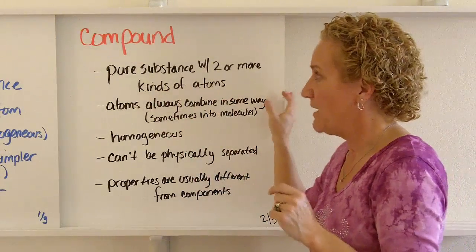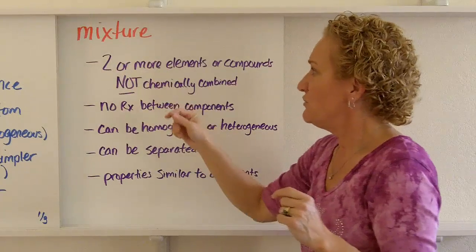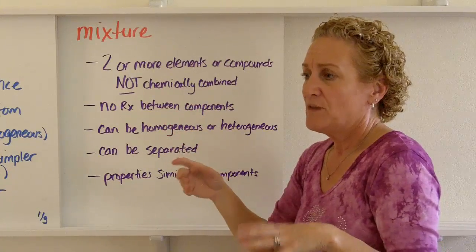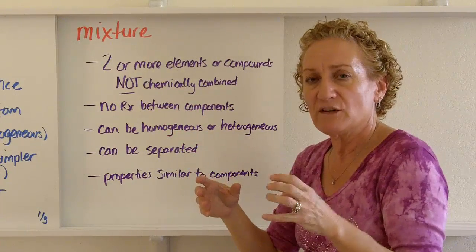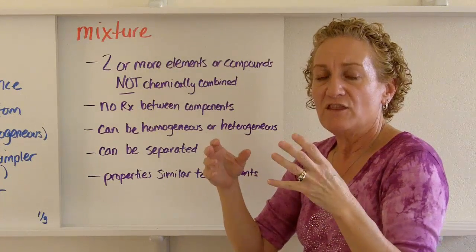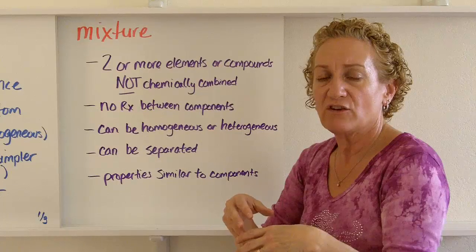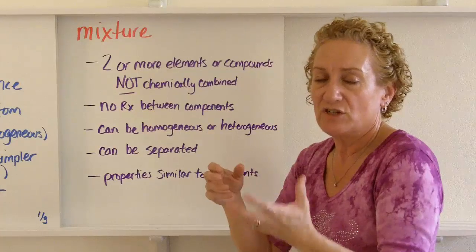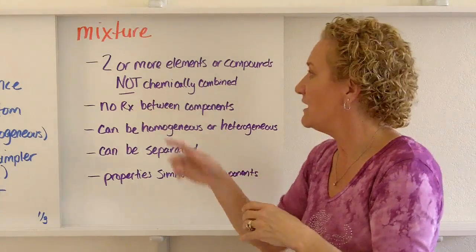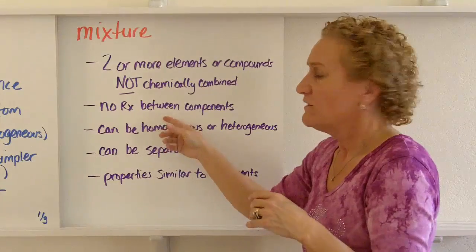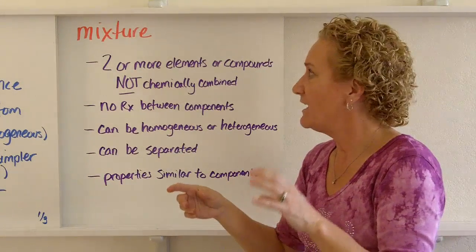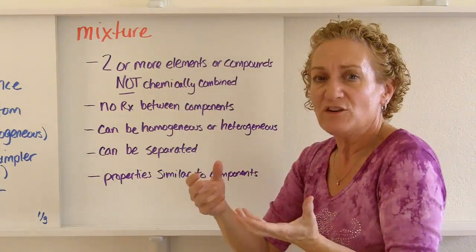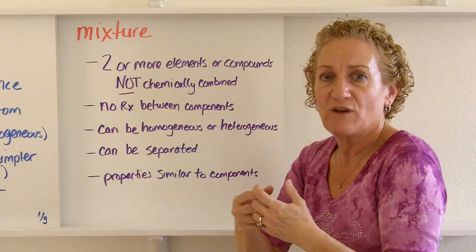So we have elements, compounds, and now we're going to talk about mixtures. A mixture is what you get when you have two or more elements or compounds that are not chemically combined. Think of Lucky Charms cereal — you have the charms and the cereal, and they're not chemically combined, they're just kind of stuck together. I could actually take the marshmallow pieces out and eat them. There's no reaction between the components, unlike with a compound where sodium and chlorine react with one another. In a mixture, they're just near each other without any chemical interaction.